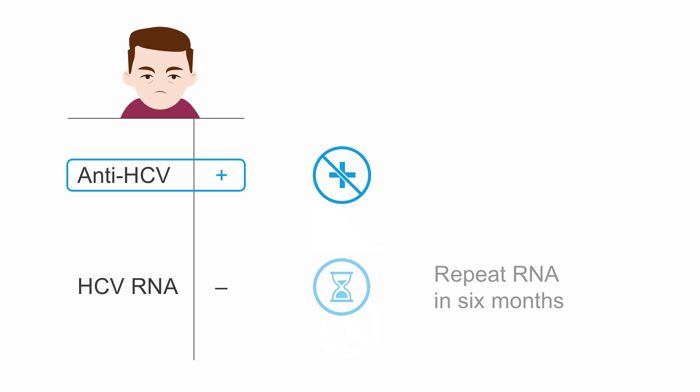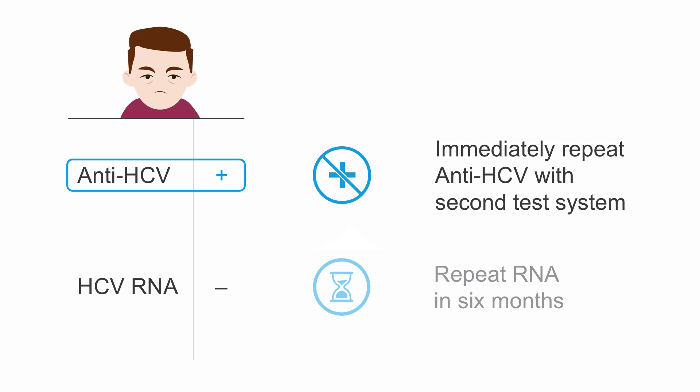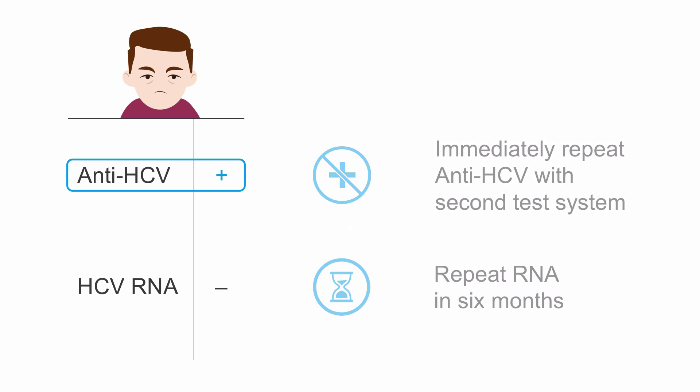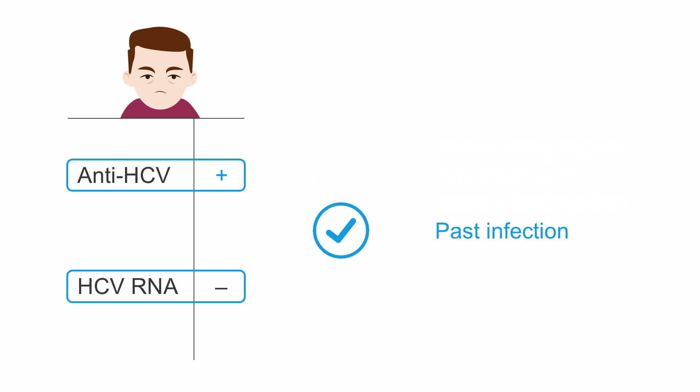So how can we find out whether it was a false positive result? We repeat anti-HCV testing with a second test system immediately to confirm or falsify the result. After having repeated both tests and having the results confirmed — so anti-HCV stayed positive and HCV RNA stayed negative — we can rule out a chronic infection and a false positive result. Therefore, there must have been an HCV infection in the past, which was cleared.